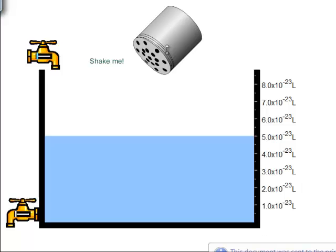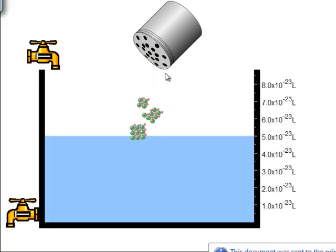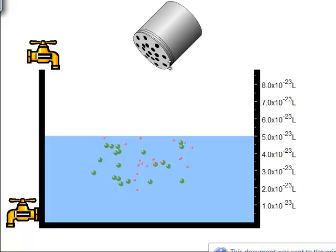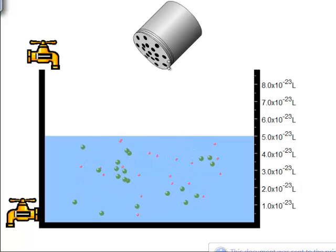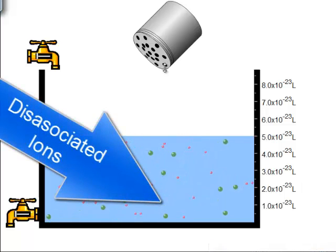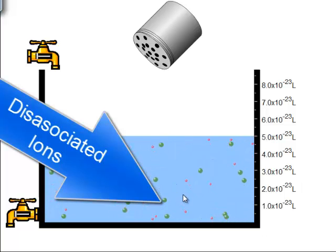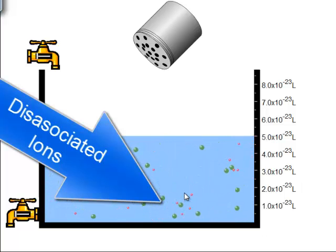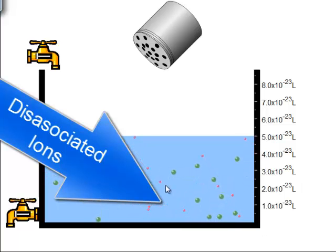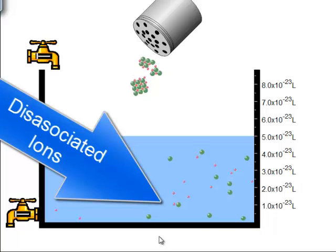This is one where you can move things — check this out. Sodium chloride. It's a salt shaker. Sodium chloride in water. Sodium chloride is a soluble salt, so it should be a strong electrolyte, and it should dissociate 100% into the sodium ions and the chloride ions — and it does.